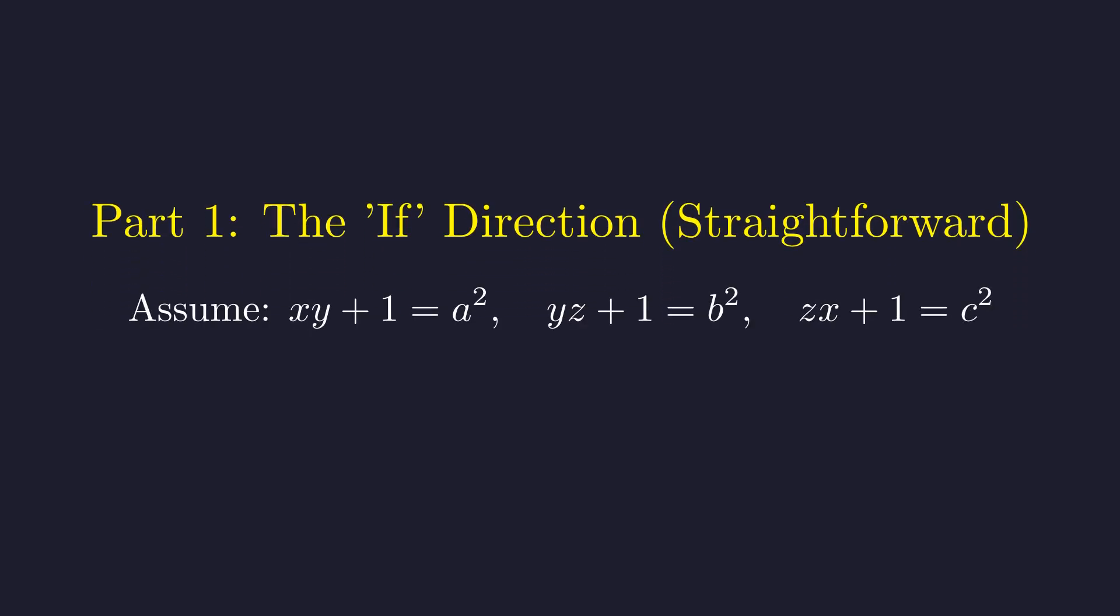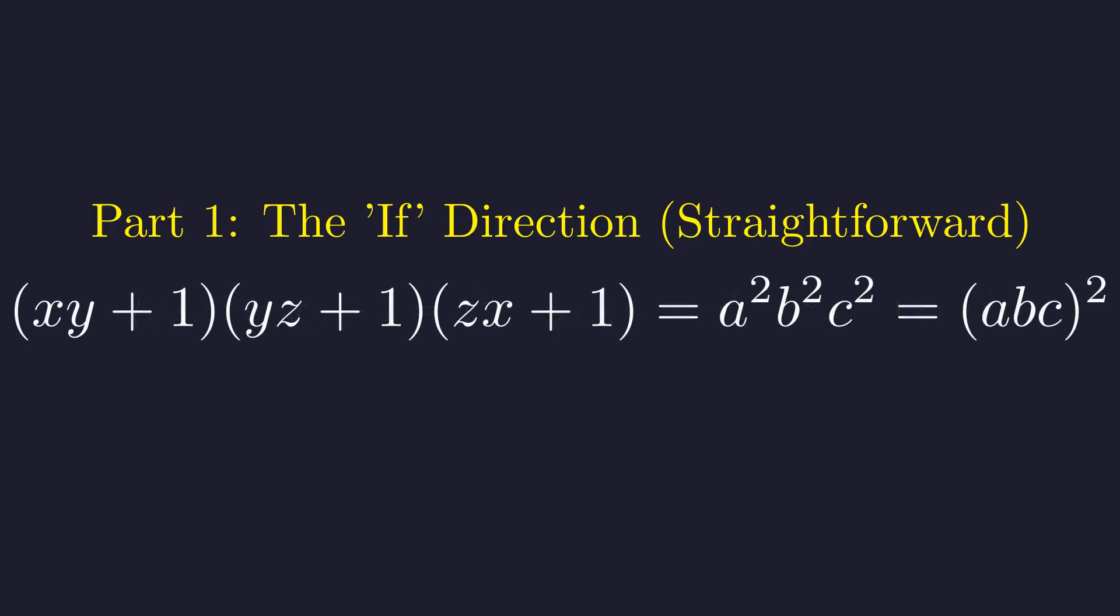Let's assume each of these three factors is already a perfect square. We can write them as a squared, b squared, and c squared, where a, b, and c are just some positive integers. Well then, their product becomes a squared times b squared times c squared, which is just the square of a times b times c. Since a times b times c is definitely an integer, we've got ourselves a perfect square. And just like that, one direction is done.